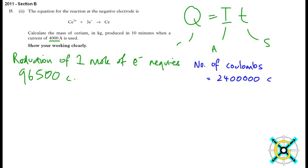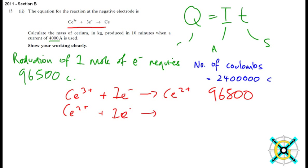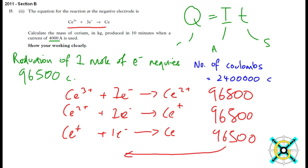So we have to see, in this reduction here, we can see that three moles of electrons are used. So from Ce3+ plus one electron, this is Ce2+, that's 96,500. And Ce2+ plus one e minus, Ce+, 96,500. And Ce+ plus one e minus, Ce, 96,500.